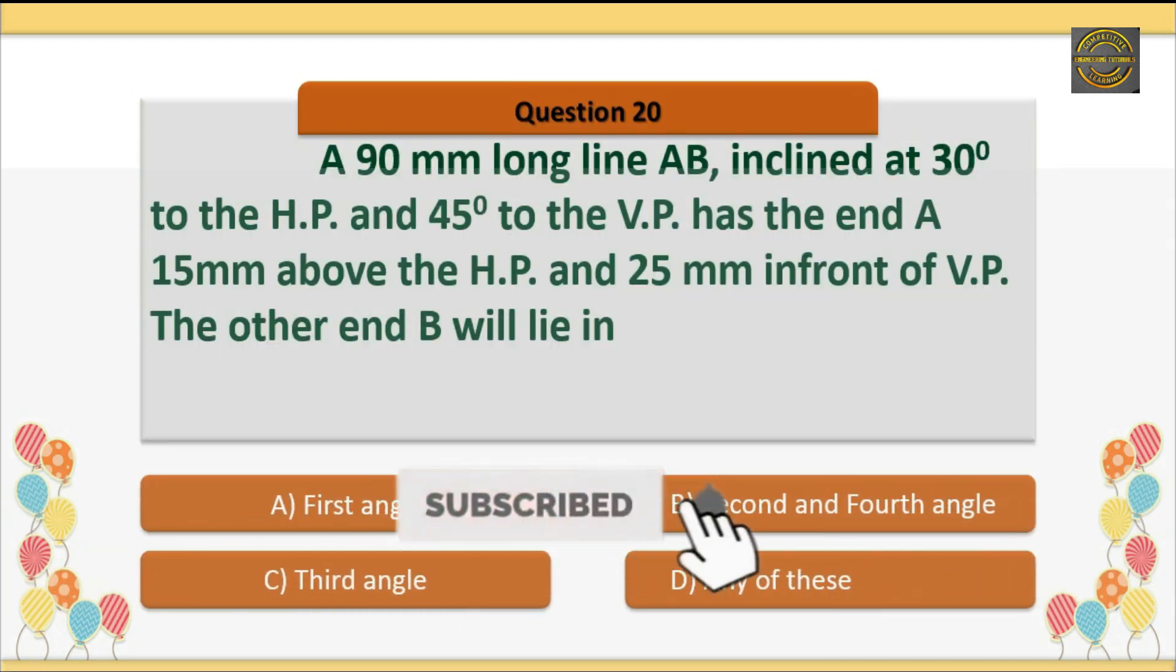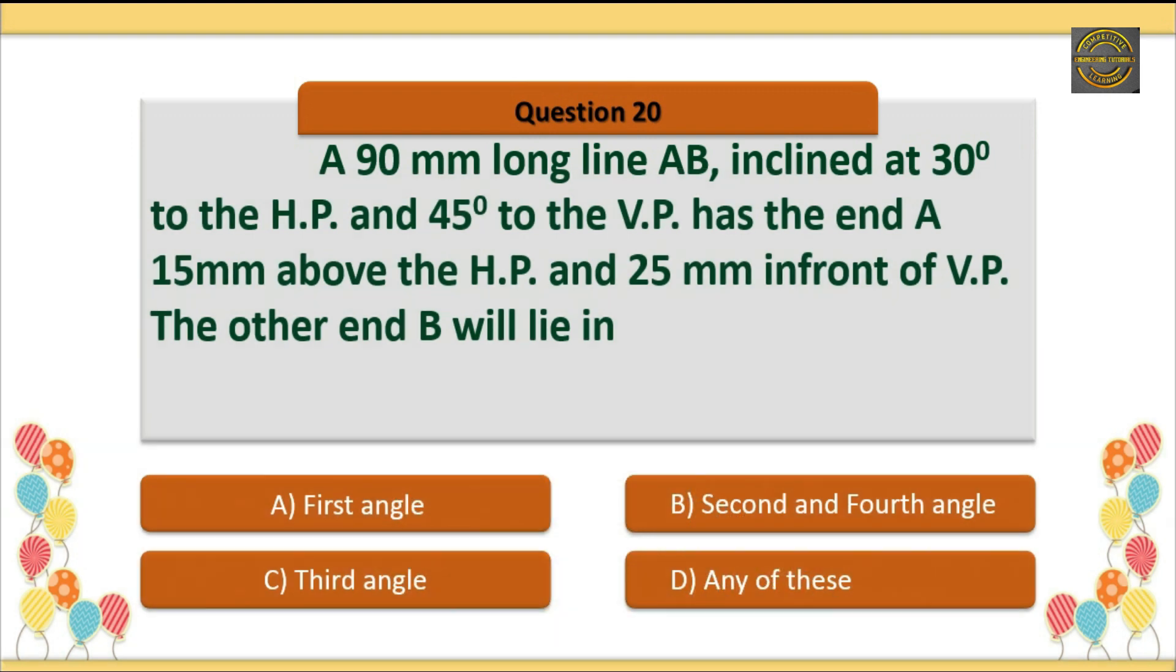Question 20: A 90 mm long line AB inclined at 30 degrees to the HP and 45 degrees to the VP has the end A 15 mm above the HP and 25 mm in front of the VP. The other end B will lie in? Option A: First angle. Option B: Second and fourth angle. Option C: Third angle. Option D: Any of these. Option D is correct: Any of these.